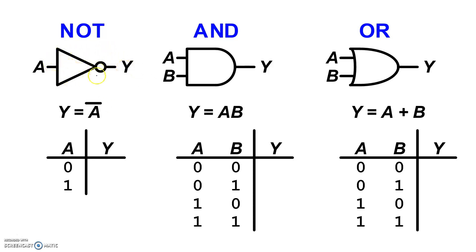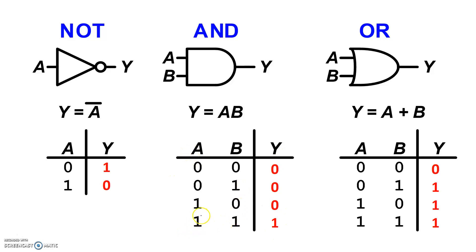Here's the schematic of the NOT gate. The Boolean expression is y equals a with a bar over it — that's how you write y is NOT a — and here's the truth table for the NOT. Similarly, the AND gate has its Boolean expression and truth table. The truth table has a 1 if and only if both a is true and b is true — that's the only time when y is true. For the OR gate, the output y is 1 if either a is 1 or b is 1, giving us 1 for the last three rows of the truth table.